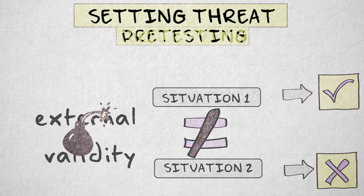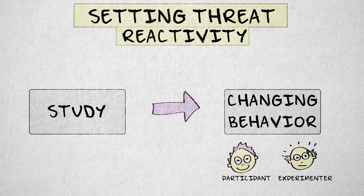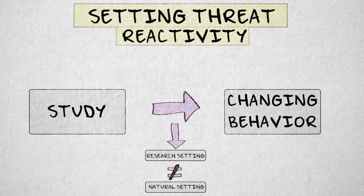The second artificiality threat is reactivity. A reactivity threat occurs when the participants or experimenter react to the fact that they are participating in a research study. Reactivity includes participant and experimenter expectancy and altered participant behavior, for example due to nervousness. This can cause the hypothesized relation to occur only in a research setting and not in a natural setting.